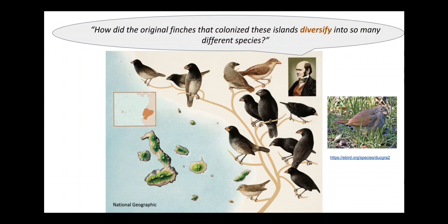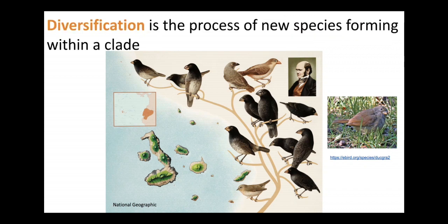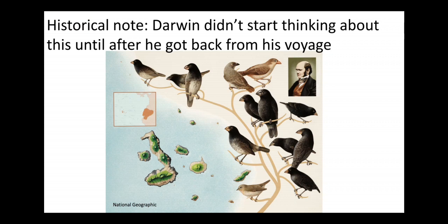Darwin was not particularly interested in the finches he collected on the Galapagos, but eventually many years later after returning home he came to pose the question: how exactly did the finches originally get to the island, and how did they diversify? How did one species of finch diversify into so many different kinds of species? We consider this to be the process of speciation and diversification where multiple species form within a clade. Darwin did not pose this question while he was in the Galapagos — it was not until sometime later that he began to look at those specimens differently.